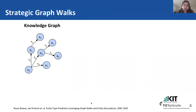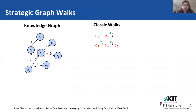The first one is the classic walk. In the classic walk, we consider both the entities and the relations between them. Starting from node E3, we go to R2, E1, R1, E2. Then again we go E3, R2, E4, R3, E5. Also starting from E3, we have E3, R2, E4, R1, E6. So here we considered both the entities and the relationships between them.